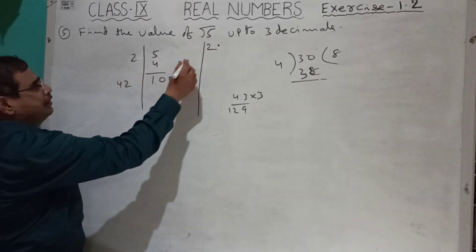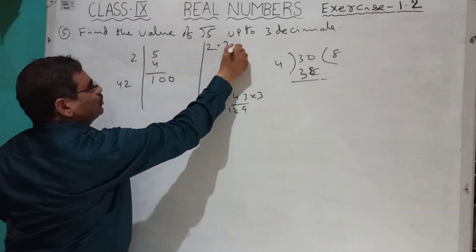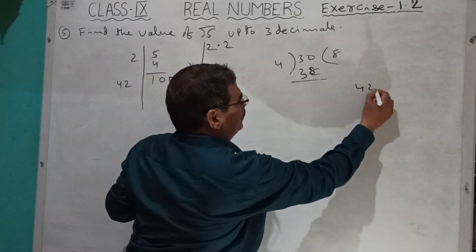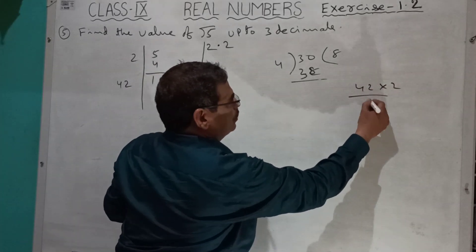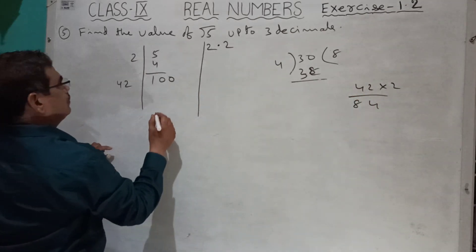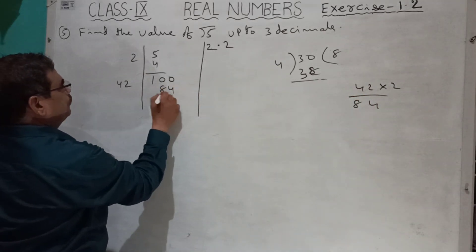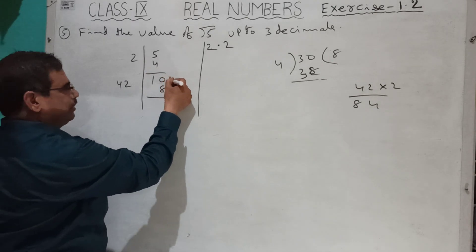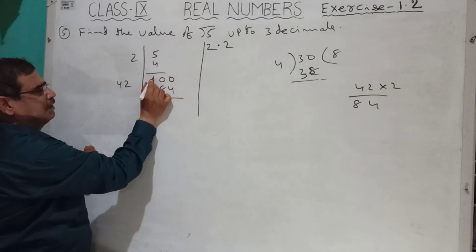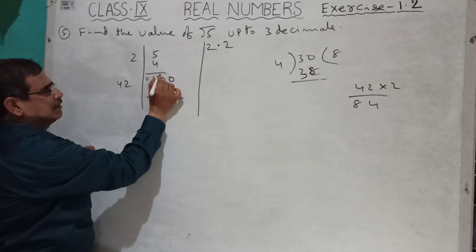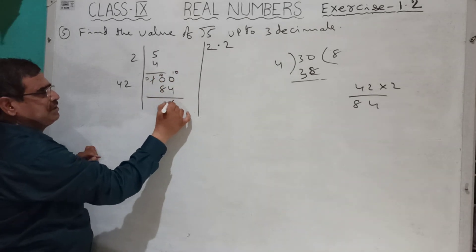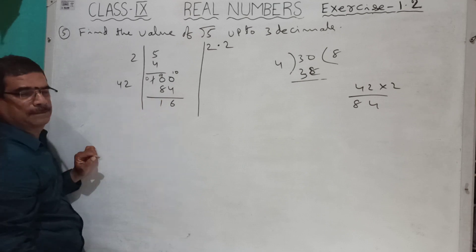So I will write 2, here also 2. So 42 into 2: 2 twos are 4, 2 fours are 8, answer is 84. Here 100 — nothing is there, so here also 0. I will take borrow here. Here 0 will come, here 9 will come, here 10 will come. 10 minus 4 means 6; 9 minus 8 means 1.